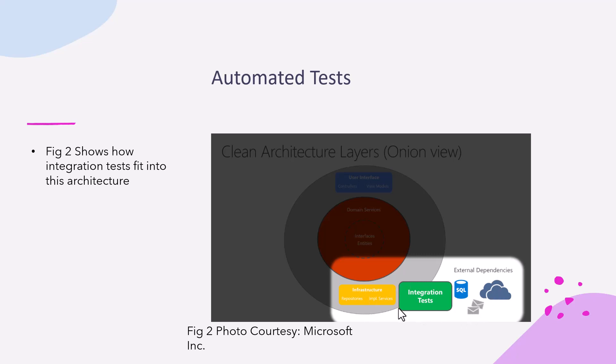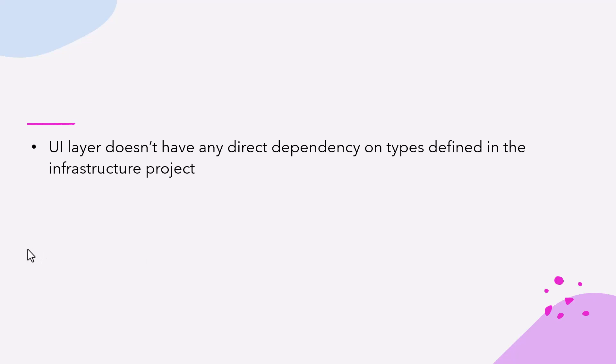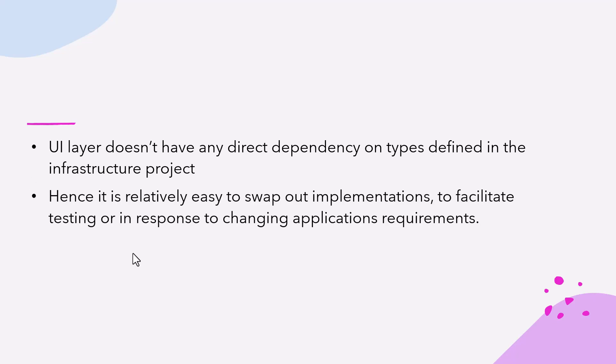All together, you can carry out an integration test of this part. The UI layer doesn't have any direct dependency on types defined in the infrastructure project. Hence, it is relatively easy to swap out implementations to facilitate testing or in response to changing application requirements. ASP.NET Core has built-in support for dependency injection, which makes this clean architecture the most appropriate way to structure non-trivial complex applications compared to monolithic typical ASP.NET applications.